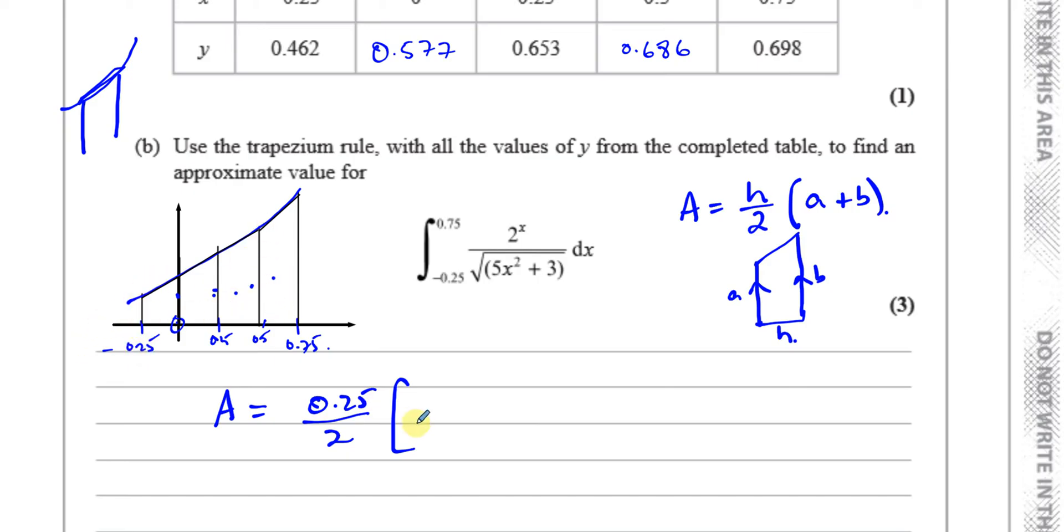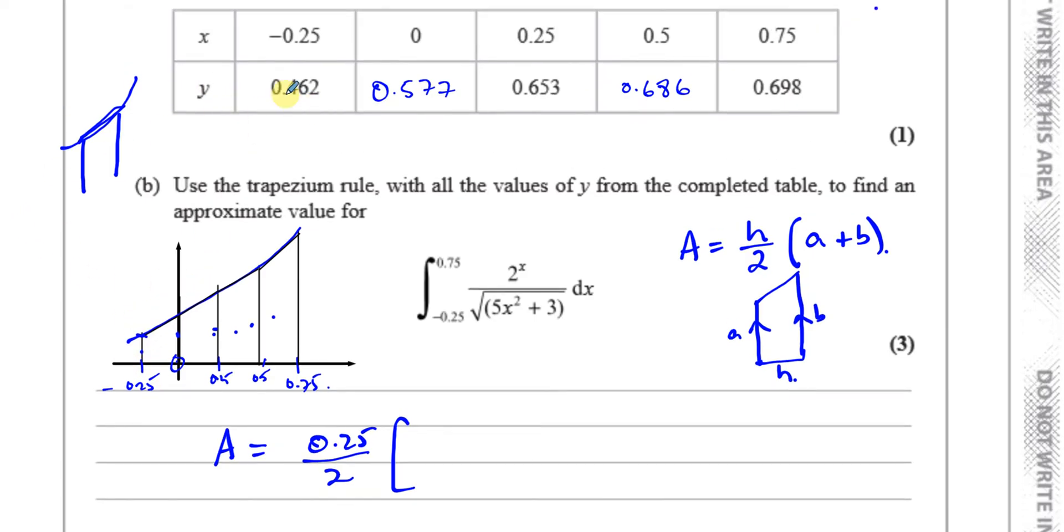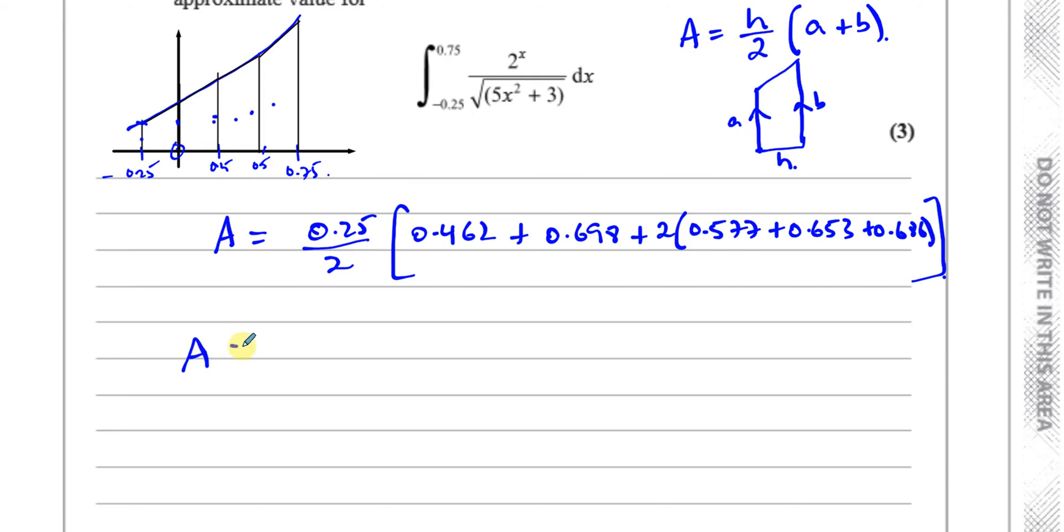So therefore we can take the first height. Now this height is the y value for that value of x, so that's 0.462 and the last one is 0.698. As I said, the rest of them, these three, are used twice. So you have 2 times the sum of those three, which is 0.577 plus 0.653 plus 0.686. And that will give us the approximate area under this curve.